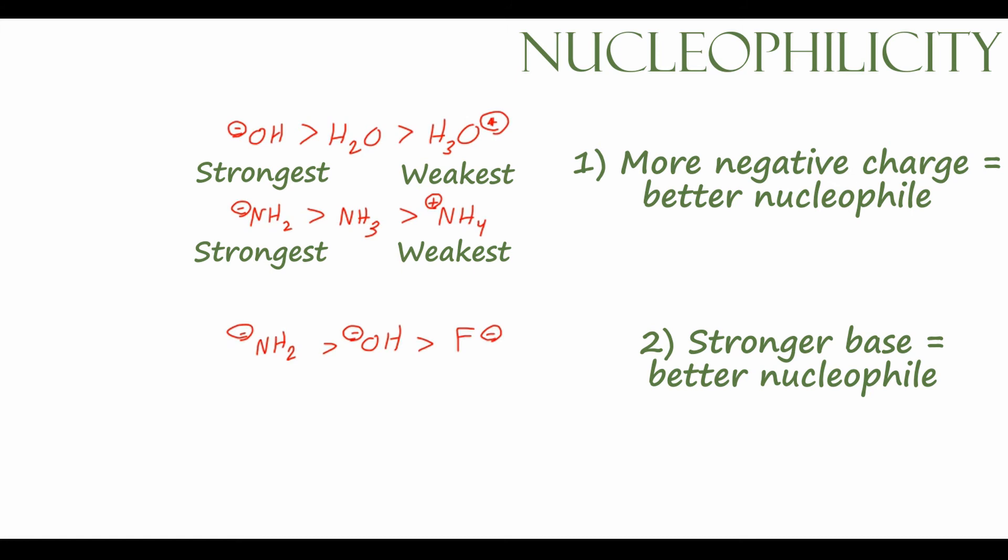Whereas OH⁻ is in the middle, it's a slightly weaker base than NH2⁻, and F⁻ is the weakest base of these three, because HF, its conjugate acid, is the strongest conjugate acid. So because NH2⁻ is the strongest base of these three, that means it's also going to be the strongest nucleophile, whereas F⁻ is the weakest nucleophile in these three compounds.